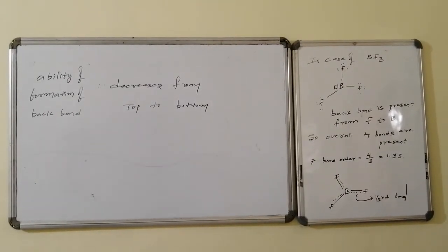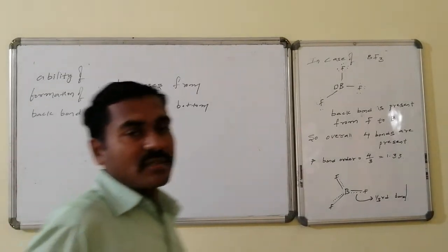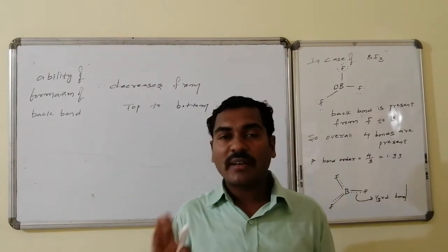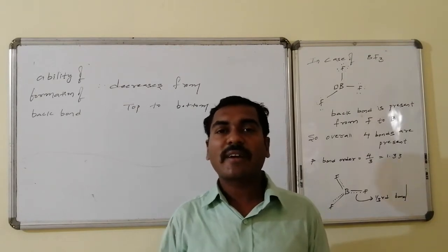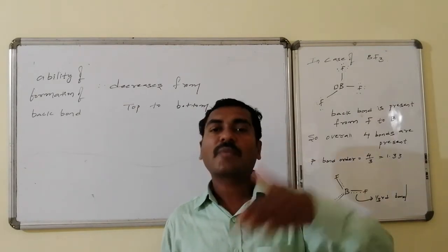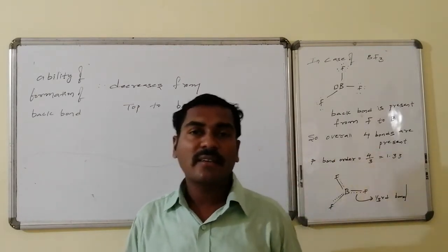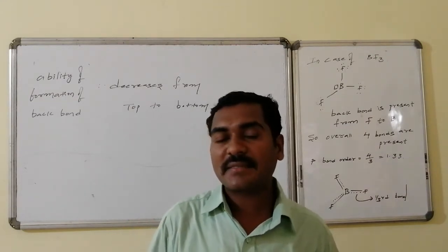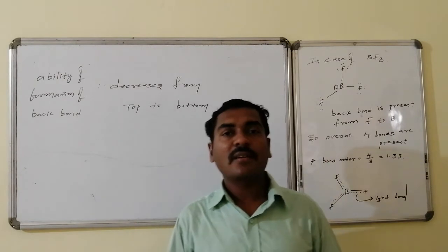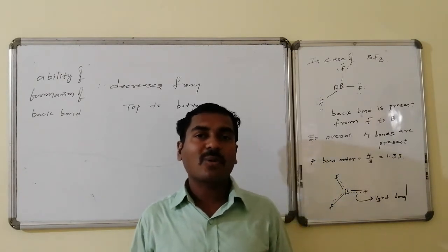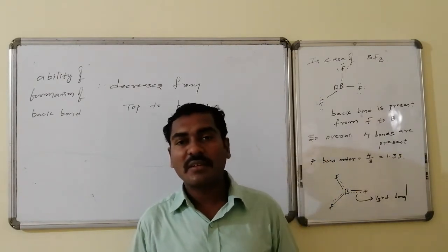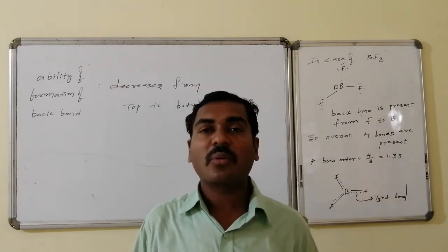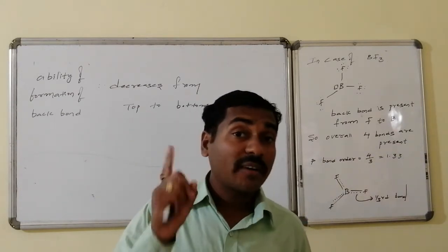The ability to form back bonds decreases from top to bottom among the boron halides — BF₃ has the highest back bonding ability, while BI₃ has the least. This is because of the dissimilar sizes and mismatching of orbitals of donors and acceptors as you go from BF₃ to BI₃.